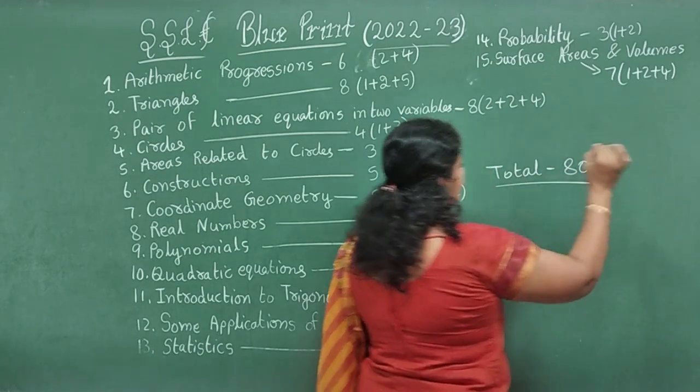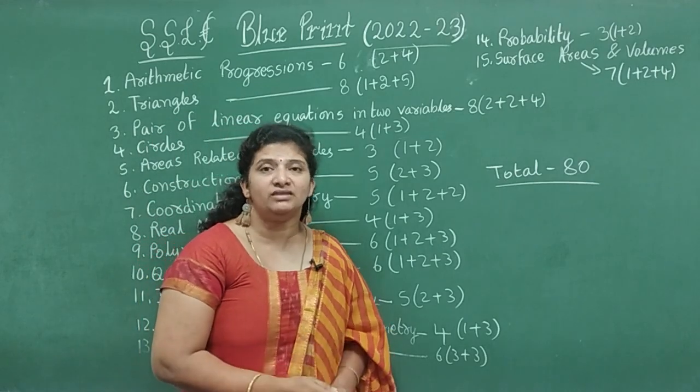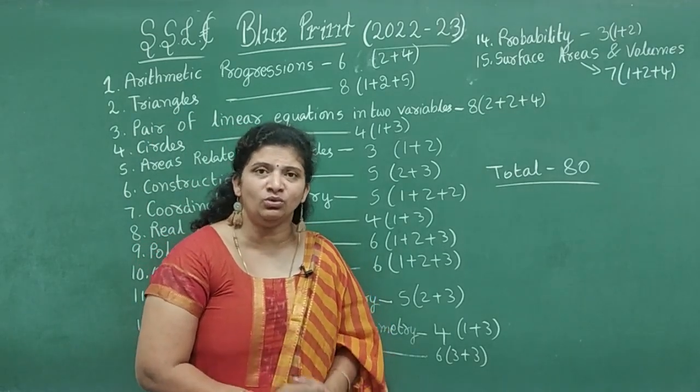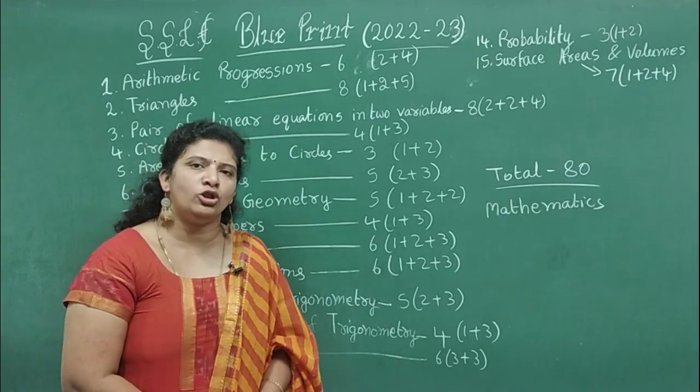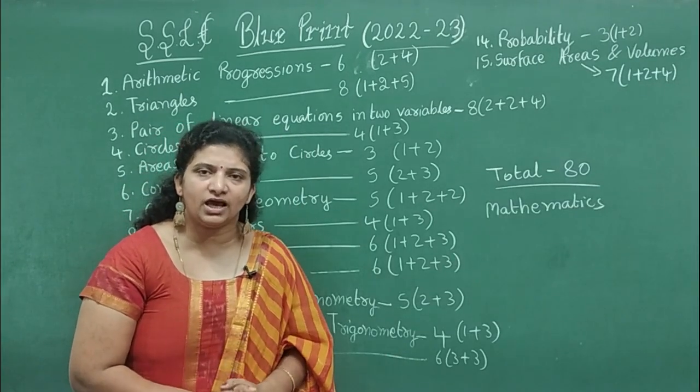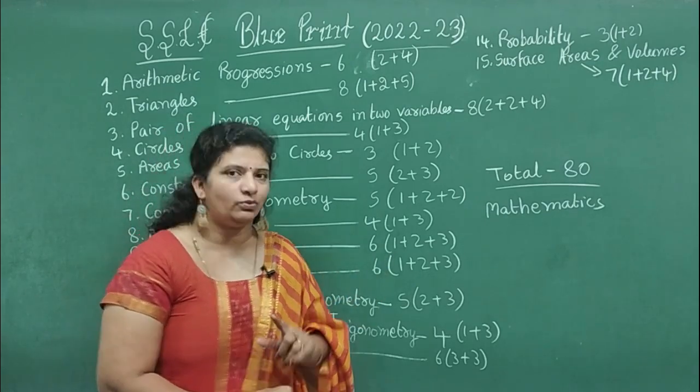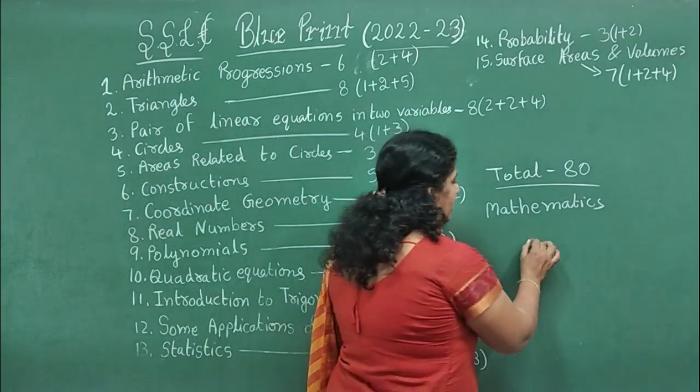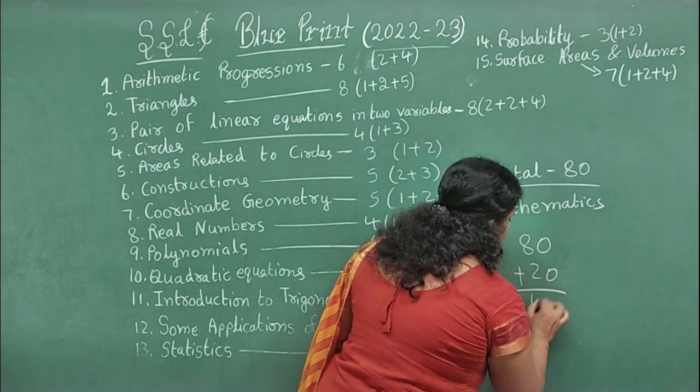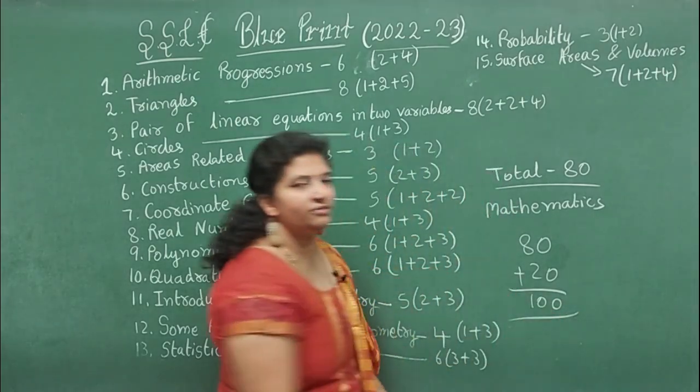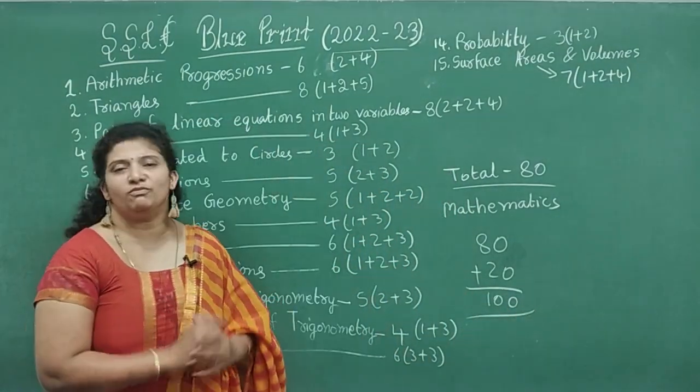This is your SSLC Mathematics 2022-23 expected blueprint. As you all know, externally you are writing exam for 80 marks and internally you are going to get 20 marks. So total 80 plus 20 will be 100 marks. Total mathematics you are going to score 100 marks.